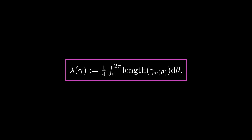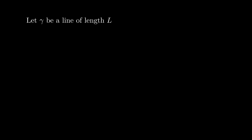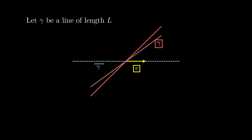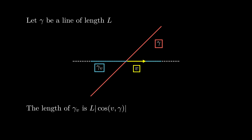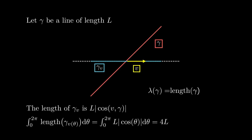To verify the first property, we check that the Crofton formula works for line segments. If we take a line segment of length L and a direction v, then the length of the projection of this line segment onto the line with direction v is going to be L times the absolute value of the cosine of the angle between the segment and the direction v. Integrating this from 0 to 2pi, we get 4 times L. But remember there was a 1/4 term in the formula that fixes this, so lambda of this line segment is precisely L.